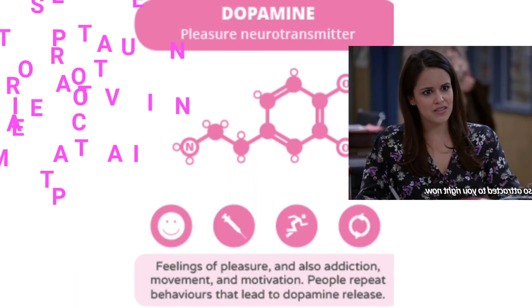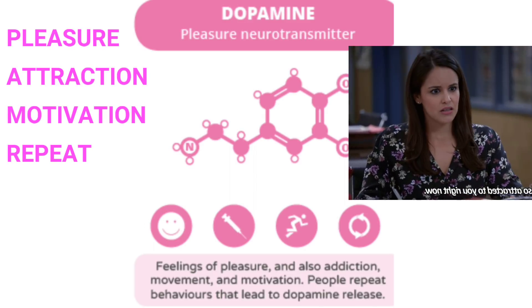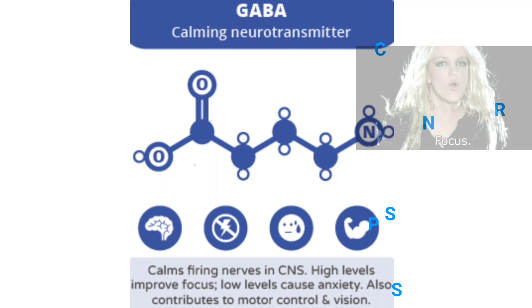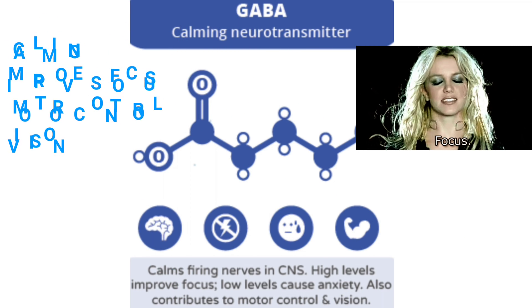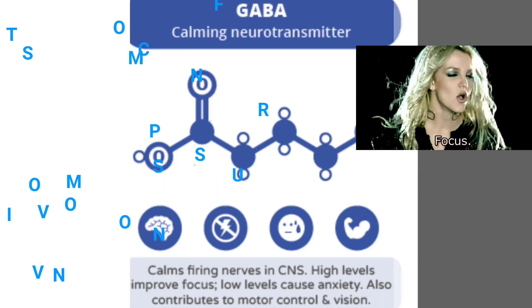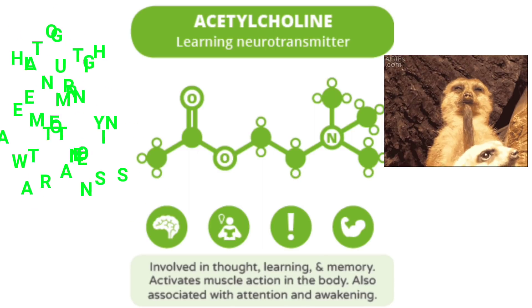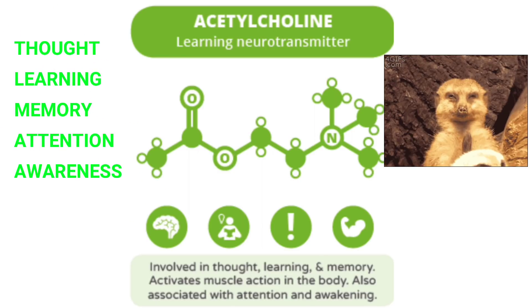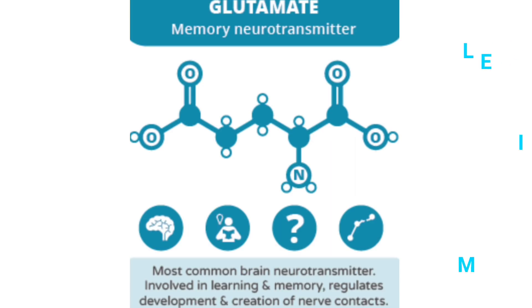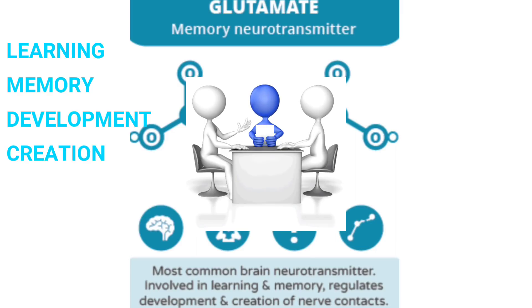Dopamine is the pleasure neurotransmitter, associated with feelings of pleasure, addiction, movement, and motivation — people repeat behaviors that lead to dopamine release. GABA (gamma-aminobutyric acid) is a calming neurotransmitter that slows firing nerves in the CNS; high levels improve focus while low levels cause anxiety, and it also contributes to motor control and vision. Acetylcholine is the learning neurotransmitter, involved in thought, learning, memory, muscle activation, attention, and awakening.